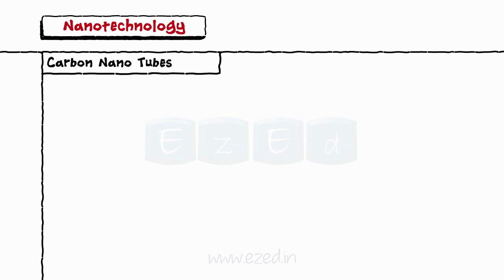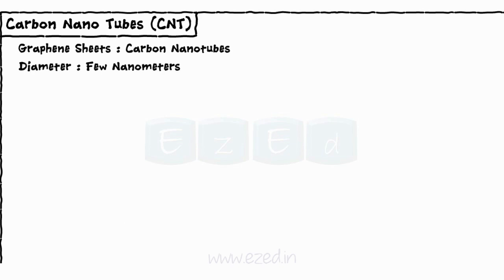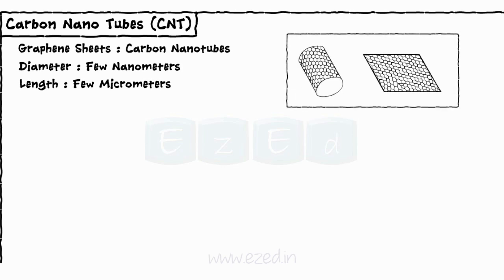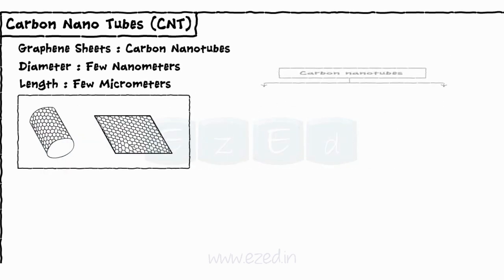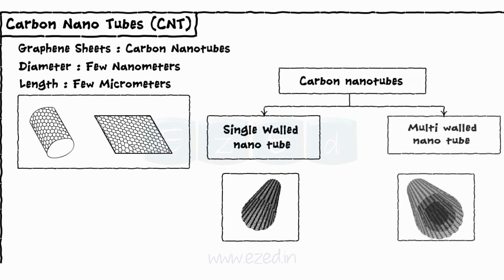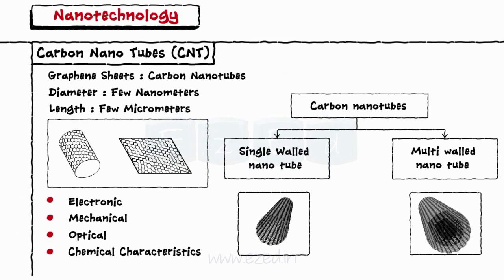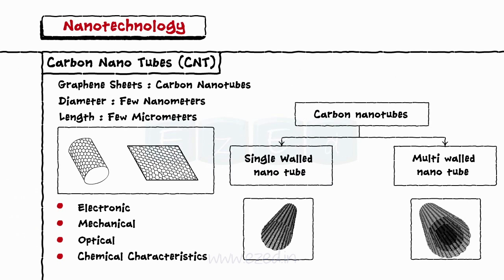We will learn about carbon nanotubes. Carbon particles such as graphene sheets are made into tubular forms called carbon nanotubes. They have a diameter of few nanometers and length of few micrometers. Each nanotube is made up of a hexagonal network of covalently bonded carbon atoms. Carbon nanotubes are of two types: single-walled nanotube and multi-walled nanotube. Due to such structures, these CNTs show electronic, mechanical, optical and chemical characteristics, which make them highly useful for many applications.